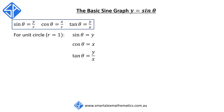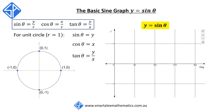To sketch the graph y equals sine theta, we need to track the change in the y value as the angle theta moves through the circle. At theta equal to zero degrees, the y coordinate is zero, corresponding to this point on the graph. As we move anticlockwise from zero to 90 degrees, the y coordinate changes from zero to one, so the graph moves up to one with a slight curve.